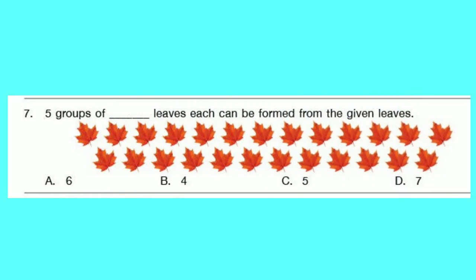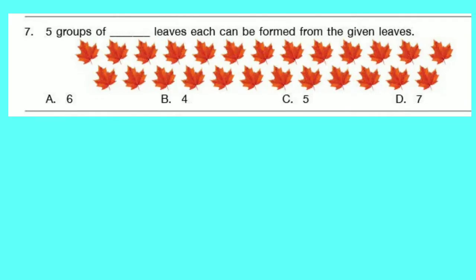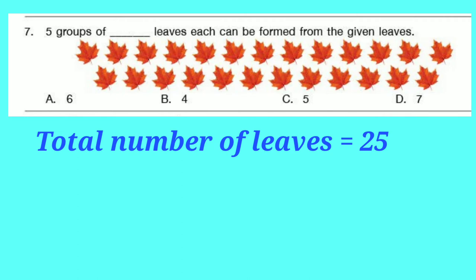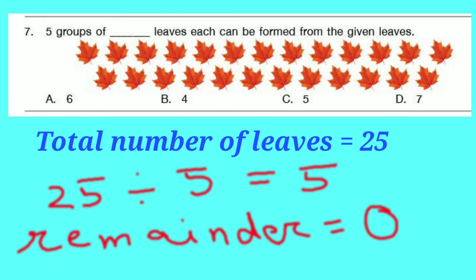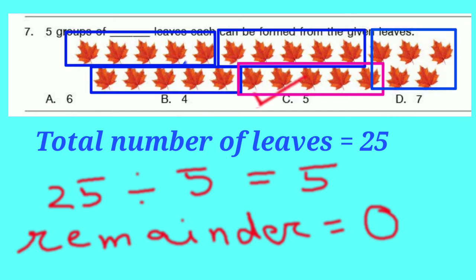Question number 7: 5 groups of how many leaves each can be formed from the given leaves? Counting the leaves, there are 25 leaves total. We have to make 5 groups. Dividing 25 by 5 we get 5. So the correct option is C — 5 leaves in each group, so we can divide the leaves into 5 groups each containing 5.